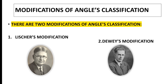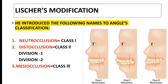These names are according to the names of those who introduced them, and their respective pictures are also shown. First of all, we will talk about Lister modification. He introduced the following names to Angle's classification: number one is neutral occlusion, which is the name for Class 1 malocclusion, and number two is disto-occlusion, which is the name for Class 2 malocclusion.